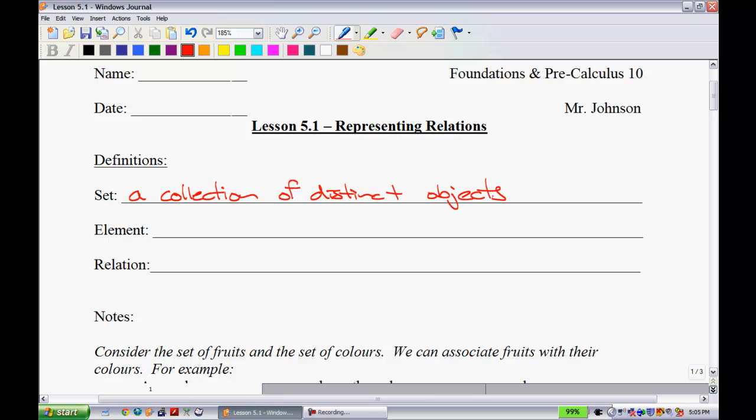A set is a collection of distinct objects. So basically any grouping that we're going to be dealing with we're going to call a set. An element is basically just a different member of the set. An element of a set is one object in a set.